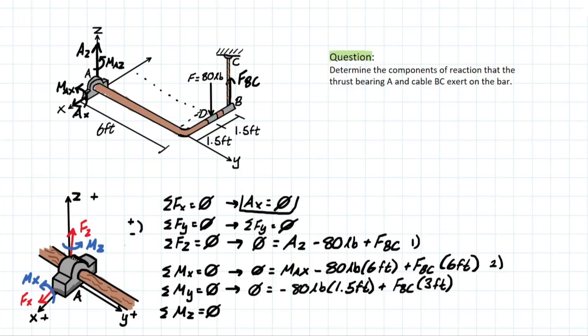See, this is a good thing now because we actually can solve for FBC here. If we isolate for FBC, we are going to be left with a force of 40 pounds. And our signs are correct, so that means it is going to be acting upwards.